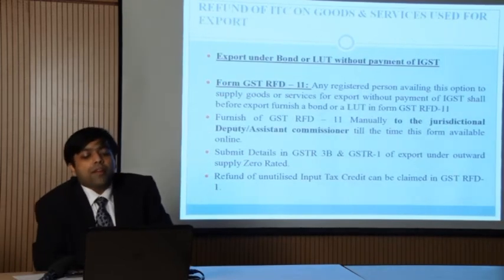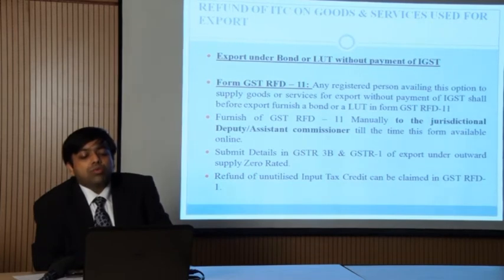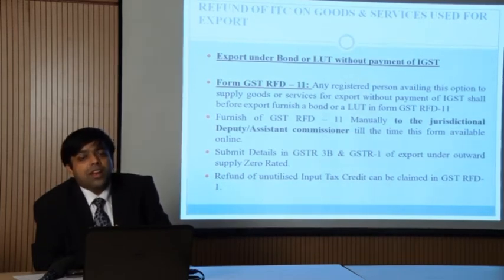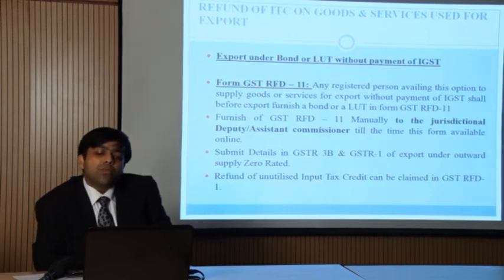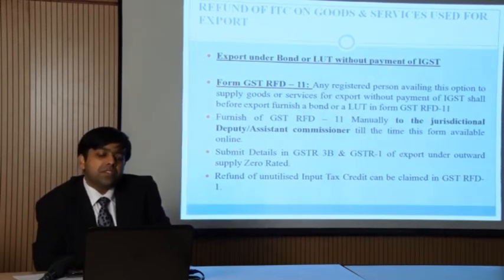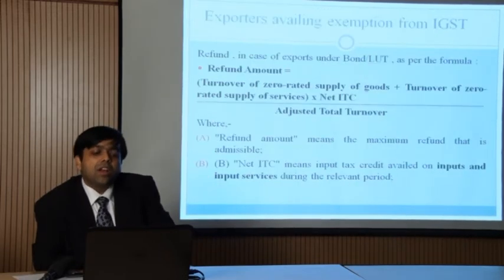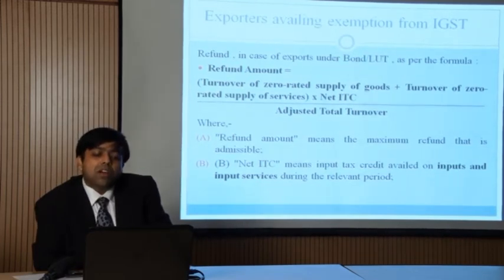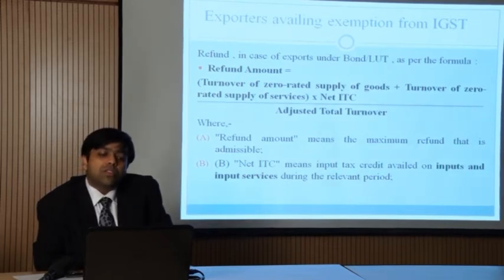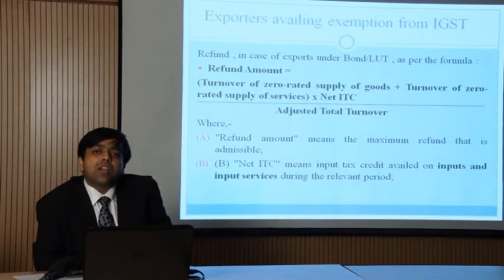For export under bond or LUT without payment — once you have furnished the bond under form RFD 11, submitted manually to the jurisdiction officer until the form is available online, you have to submit details in GSTR 3B and GSTR 1 for export of outward supply on a zero rated basis. The refund of unutilized input tax credit can be claimed in form RFD 01. The refund amount shall be equal to the turnover of zero rated supply of goods plus turnover of zero rated supply of services, multiplied by the net input tax credit, divided by the adjusted total turnover.